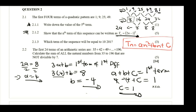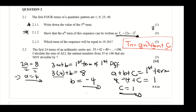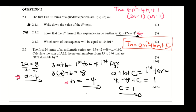Substituting our values, the equation is Tn = 4n² − 4n + 1. To write this in the required format, we factorize: 4n² − 4n + 1 = (2n − 1)². You can see that 2n and 2n are factors of 4n², and the factors of 1 give (2n − 1)(2n − 1), which equals (2n − 1)². This matches the given form, completing question 2.1.2.